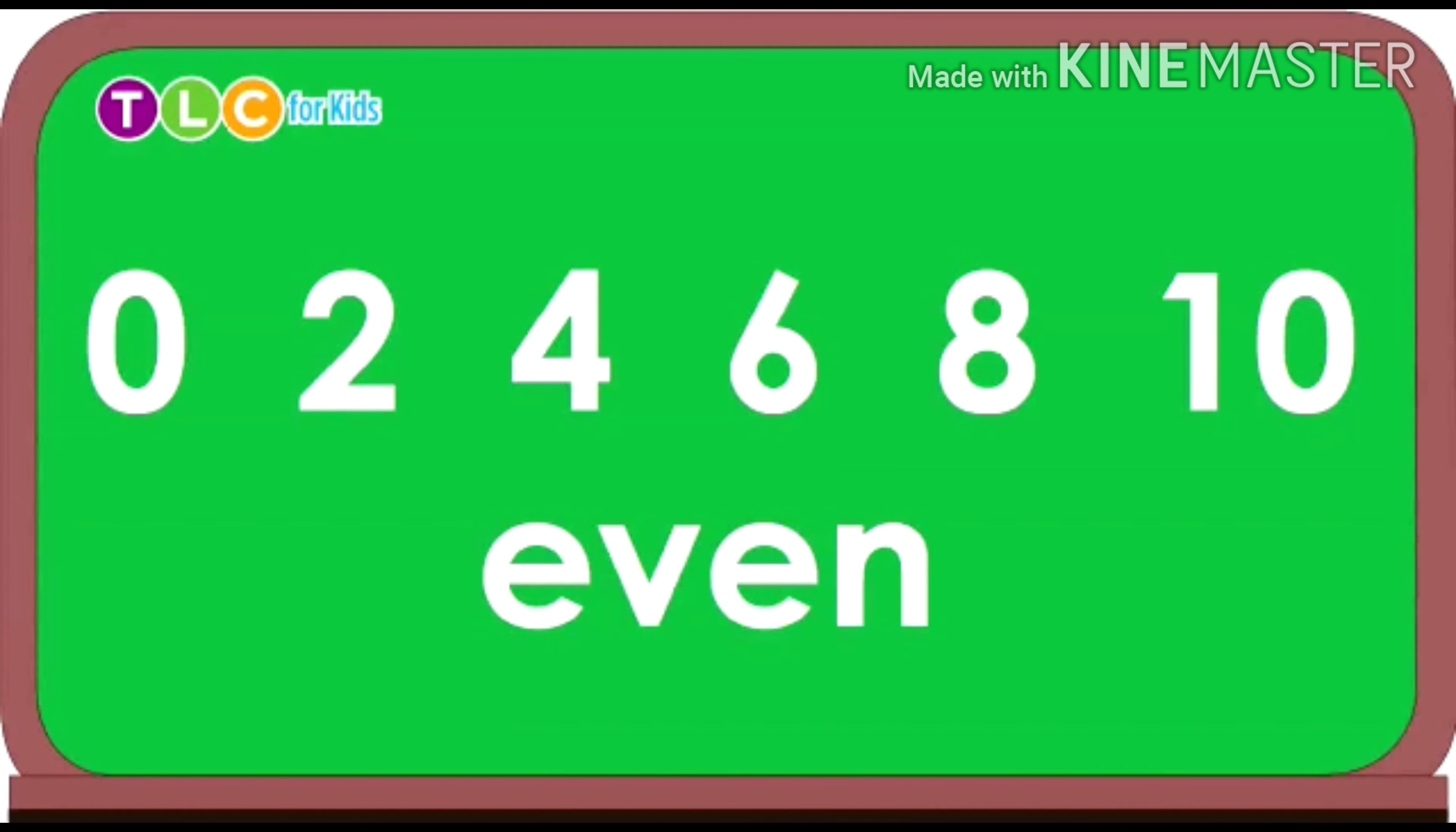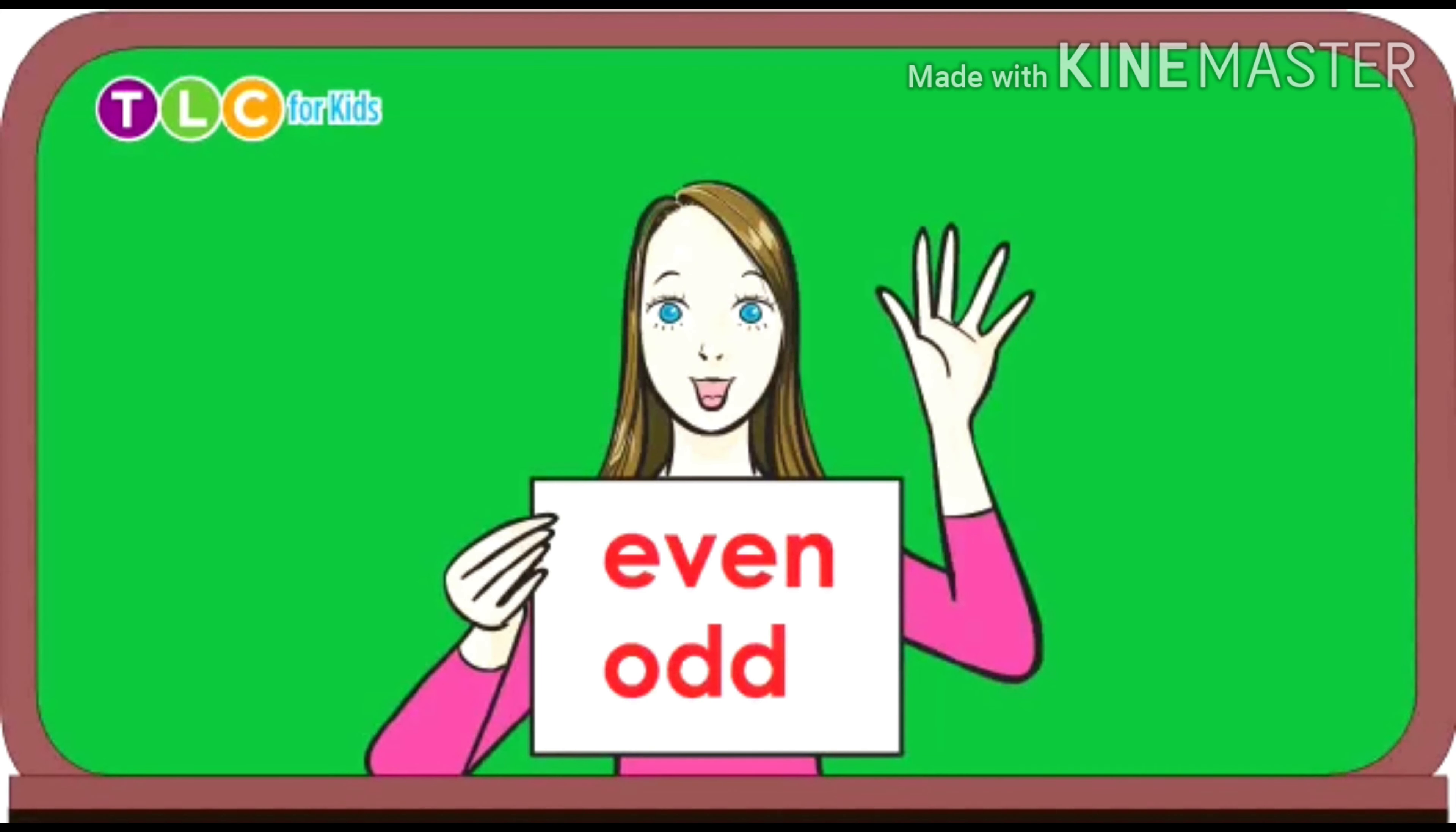Even and odd, even and odd. Two different sets of numbers. One, three, five, seven and nine are some of our odd numbers.